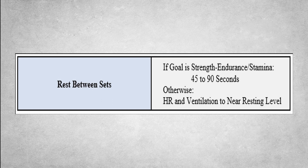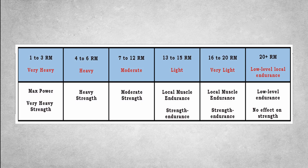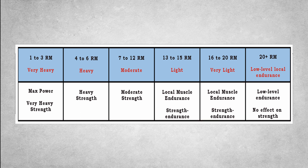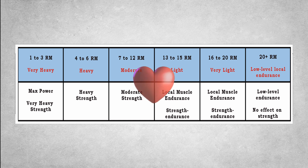Rest between sets can also get fairly complex from an exercise science standpoint. But for general and special populations, the main thing to keep in mind is when the goal is strength endurance or stamina — meaning you're training in the 12 to 15 or 15 to 20 repetition range — generally speaking you want to keep your rest periods between sets with the same muscle group to somewhere around 45 to 90 seconds. The higher end of that rest period range applies to your larger muscle groups and multi-joint movements, with the lower end applying to smaller muscle groups and single-joint movements. If the goal is not to improve strength endurance or stamina, then in most cases rest periods between sets is as easy as just making sure your heart rate and breathing rate have come back down to at or near resting level and that you feel mentally ready to perform the next set.